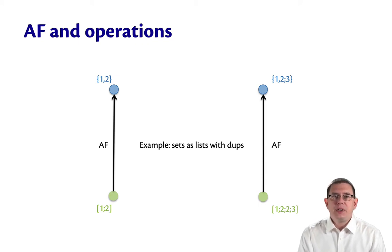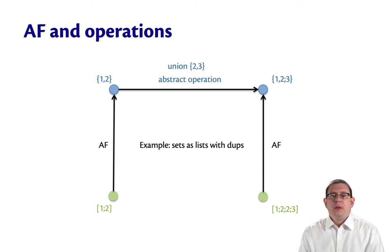Now imagine I were thinking about an operation. In particular, let's think about unioning the set {2,3} together with the set {1,2}. That's an abstract operation. So if I union {1,2} together with {2,3}, I get {1,2,3}.